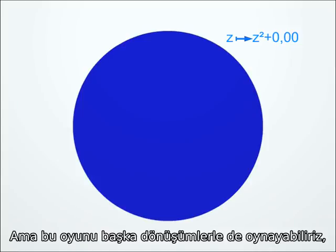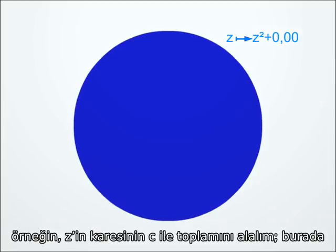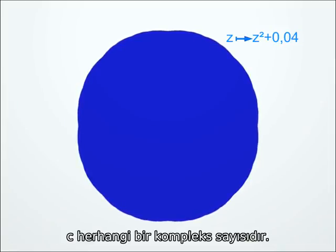But we can play the same game with other transformations. Like, for instance, those of the form Z-squared plus C, where C is a complex number that we can choose at will.